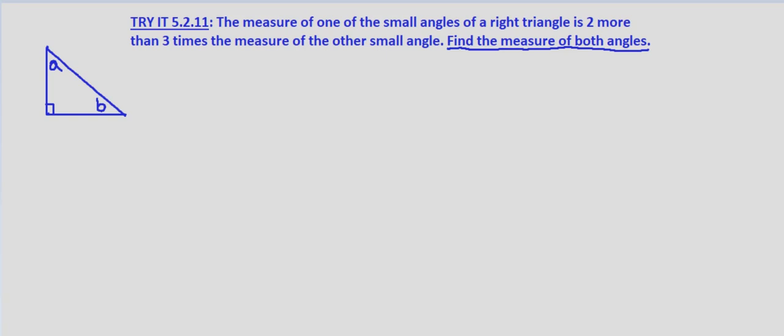Let's let A equal the measure of the first small angle, and let's let B equal the measure of the second small angle.